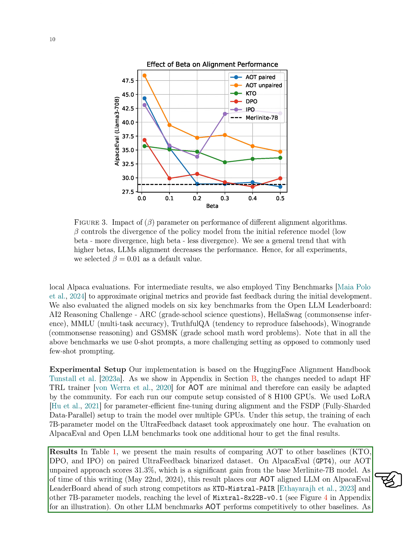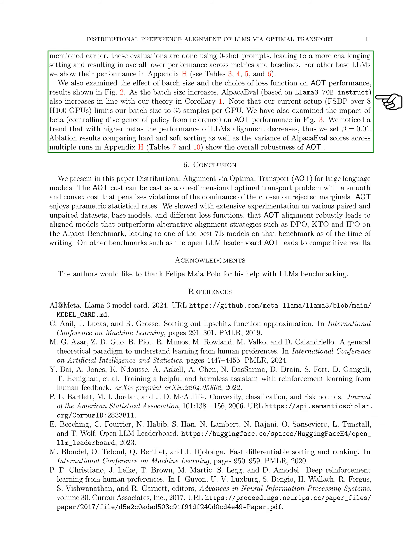In our results, we compared the performance of FSD-AOT with baselines like KTO, DPO, and IPO on the paired Ultrafeedback Binarized dataset. Our FSD-AOT unpaired approach scored significantly higher on Alpaca Eval GPT-4 compared to the base Merlinite-7B model, positioning our aligned LLM ahead of strong competitors like KTO Mistral Pair and other 7B parameter models on the Alpaca Eval leaderboard. We also performed well on other LLM benchmarks, and explored the impact of batch size, choice of loss function, and the effect of Beta on alignment performance. Our results showed that FSD-AOT is robust across different settings.